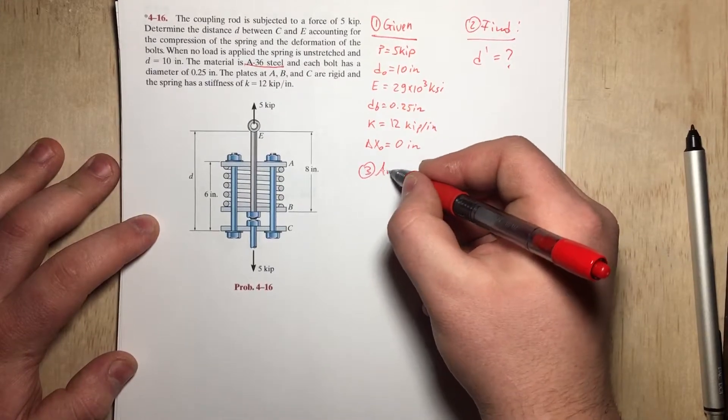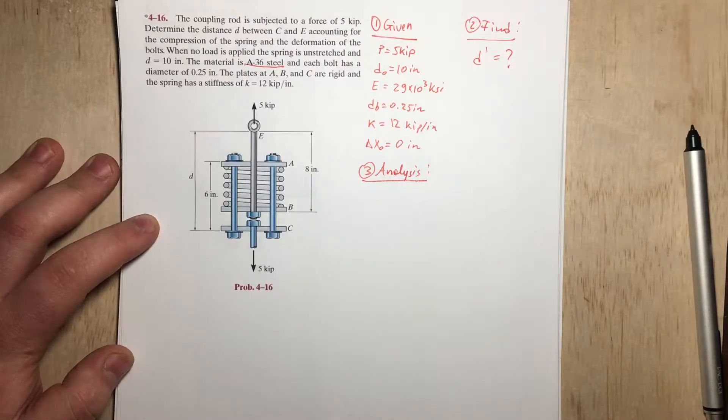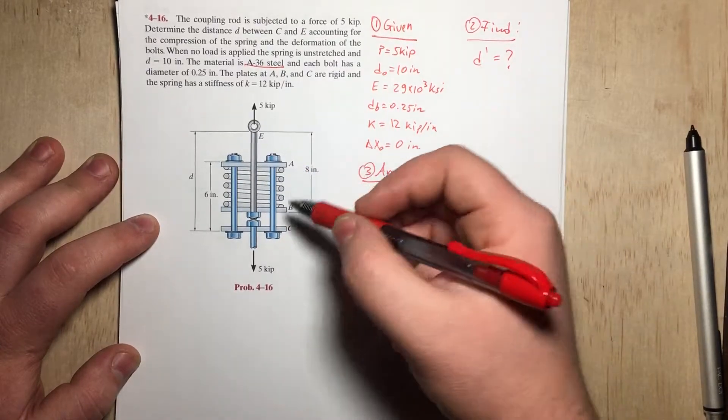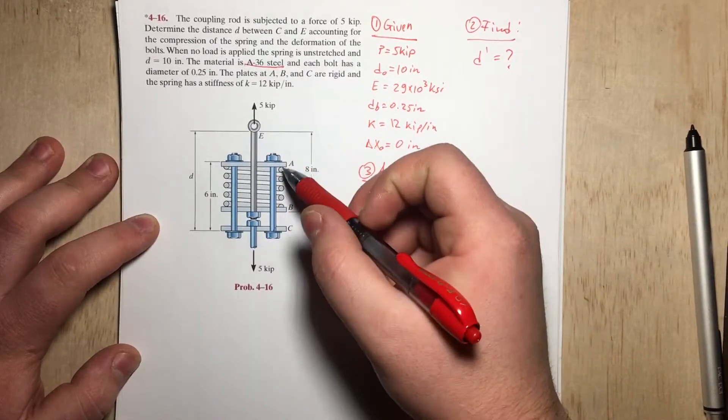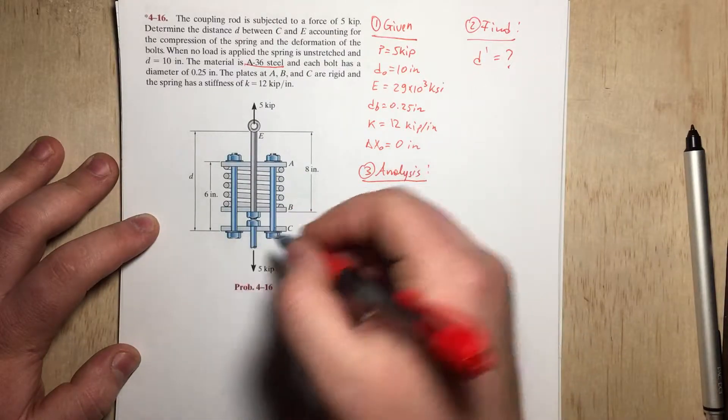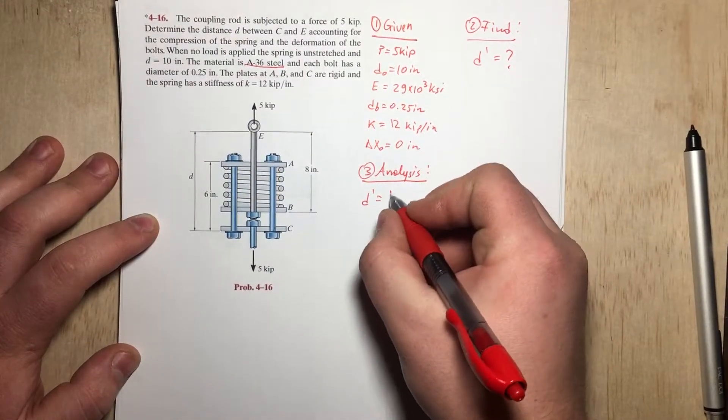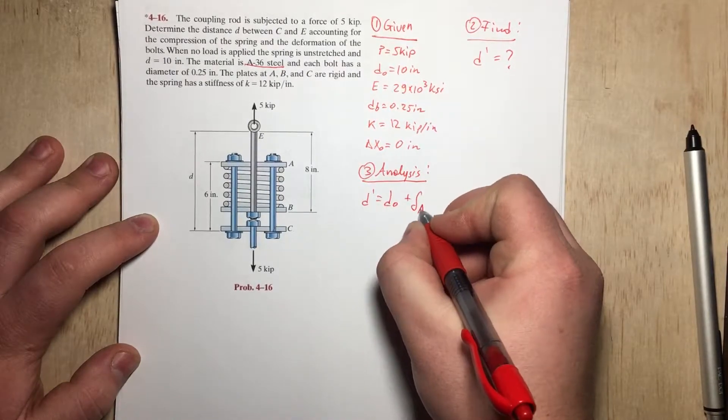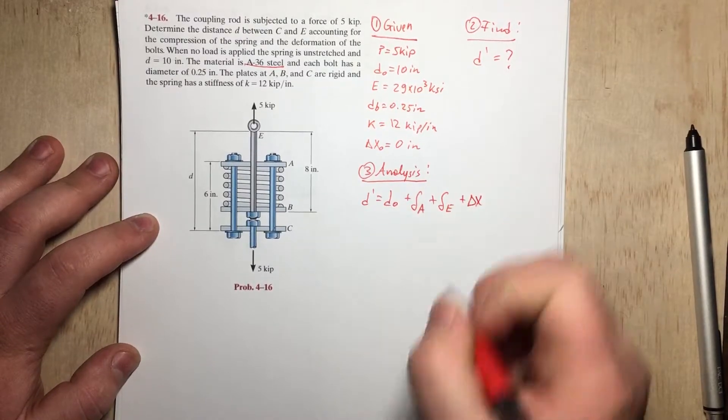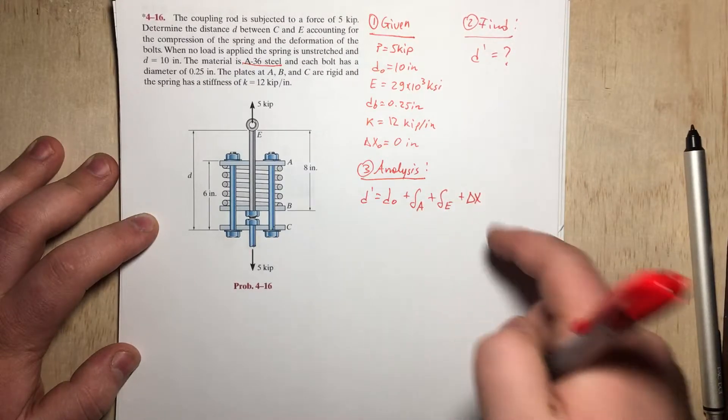So let's analyze what we're given. If we take into consideration the deformation of this rod, the deformation of this bolt A right here, and also the compression of the spring, and we add that to the distance d, that should give us d', which is what we're after. So d' will be d0 plus delta A plus delta E plus delta X. In other words, we're given d0, but we need to find delta A, delta E, and delta X.